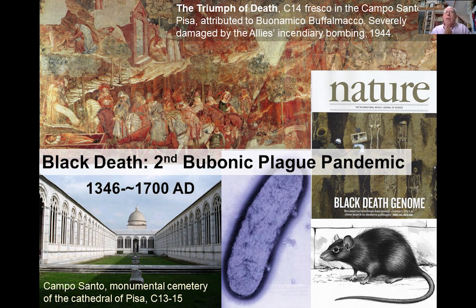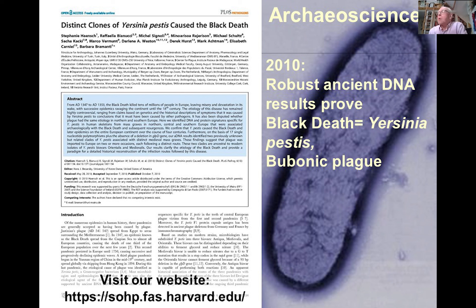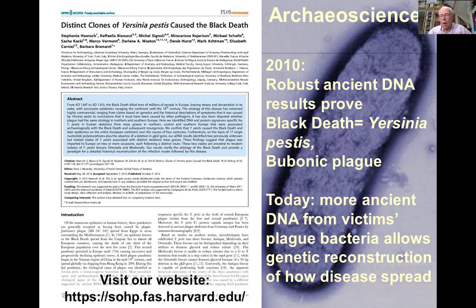It's important to realize that we know about ancient and medieval plagues thanks to the written records, and that they are rich but uneven. There are huge gaps in records that allow for different interpretations if we just focus on the written records. Archaeoscience has begun to change things in a big way. In 2010, an international team was able to demonstrate robustly that the ancient DNA of the bacteria that killed people in the Black Death was still preserved in their skeletons. It turns out, after 100 years of debate with people saying it couldn't possibly have been bubonic plague, Yersinia pestis — it was plague. And now we're in the process of reconstructing that pandemic based on the genetics of the people who died there.